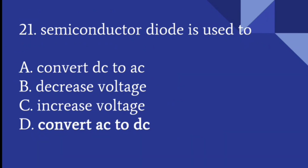A semiconductor diode is used to convert AC into DC. The application of this concept in medicine is in defibrillators, which use this principle to deliver the required electrical current.